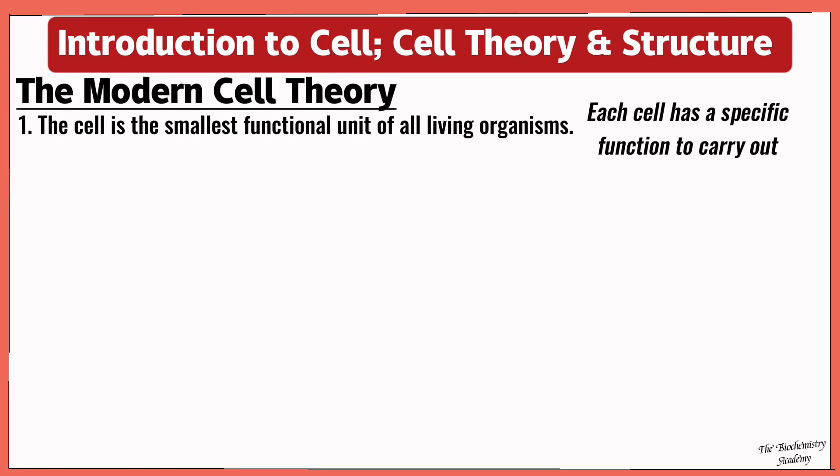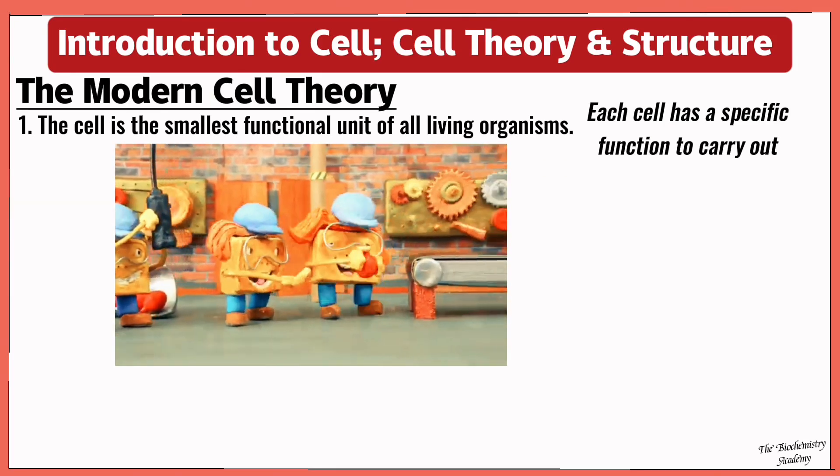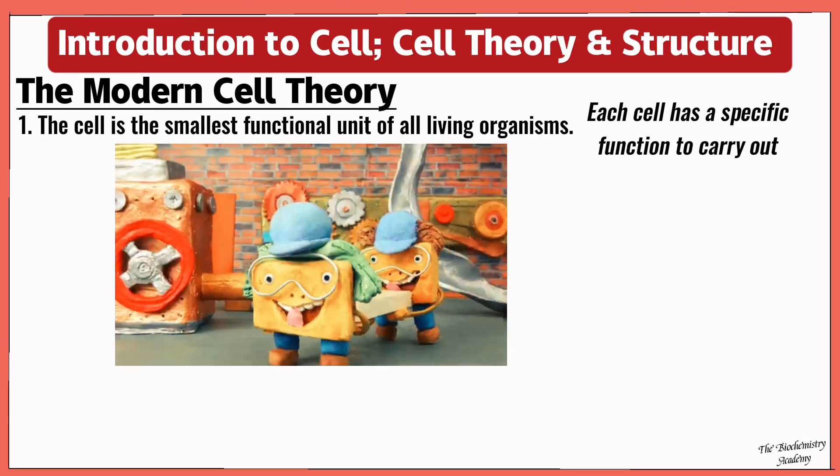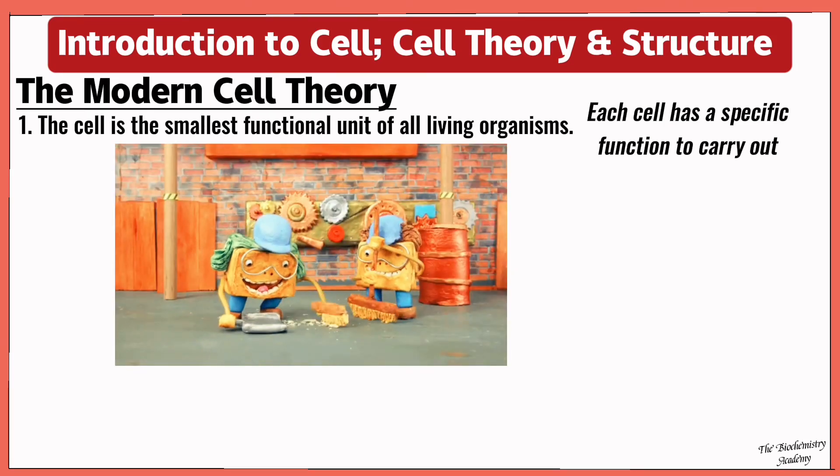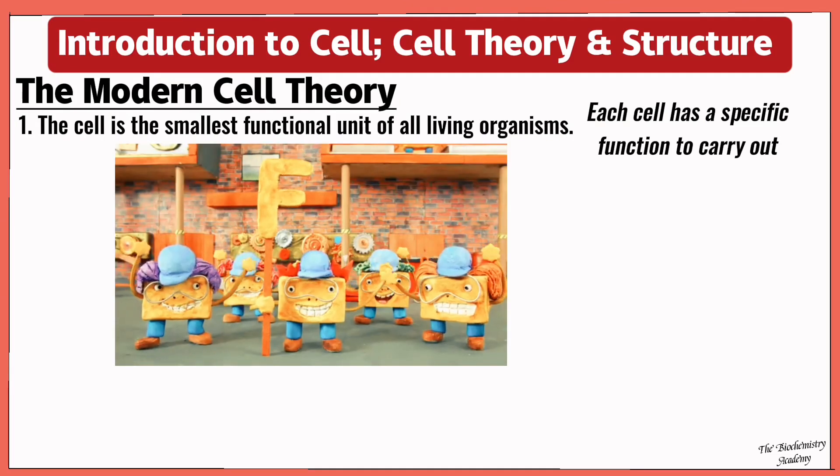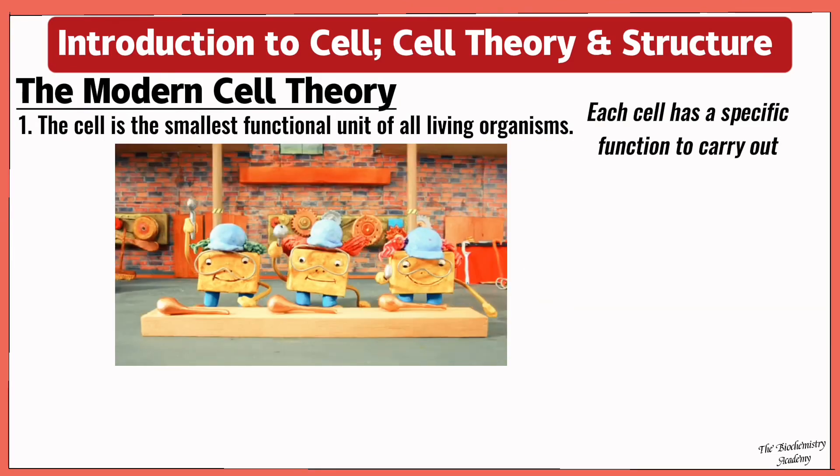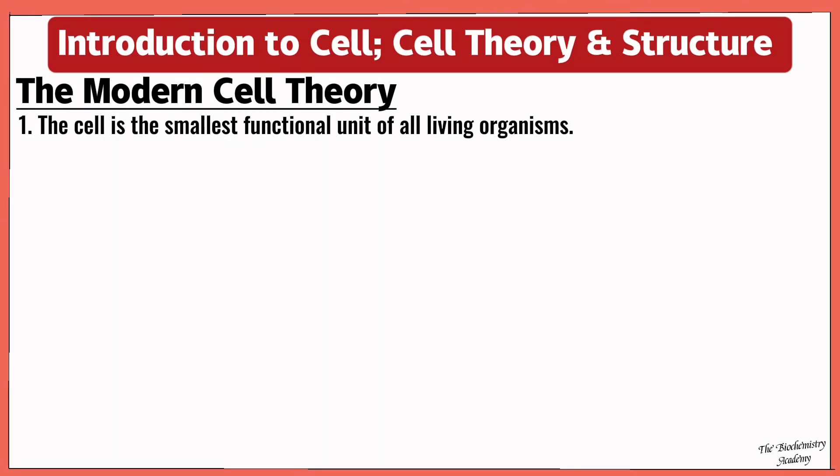The first modern cell theory is that the cell is the smallest functional unit in all living organisms, meaning that each cell has a specific or particular function to carry out. It is like a tiny factory where different parts work together to keep the organism alive and well. The second modern cell theory is that all living things are made up of cells, including we humans and both plants and animals.